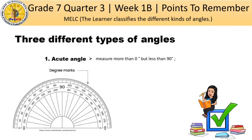An acute angle measures more than 0 degrees but less than 90 degrees. Using the protractor, we have an example of an acute angle. Looking at the illustration, the measure of the angle there is 30 degrees. Since 30 degrees is less than 90 degrees, it is indeed an acute angle. That is the appearance of an acute angle — 30 degrees.